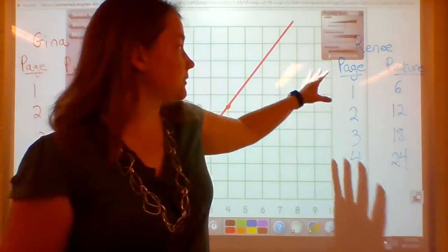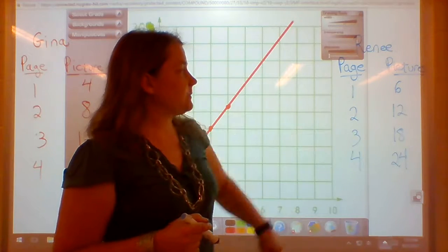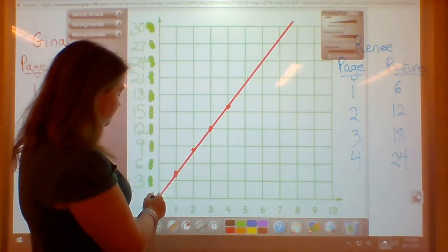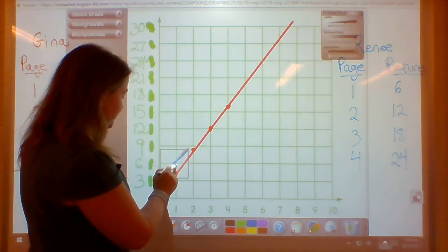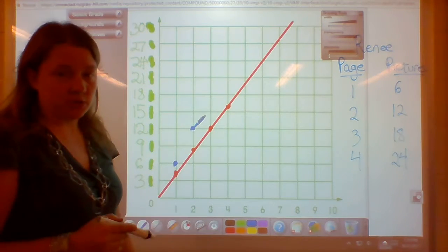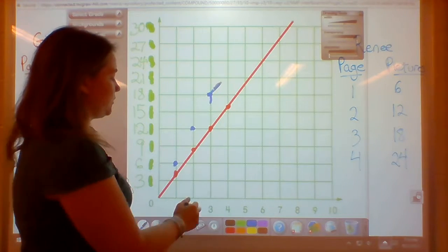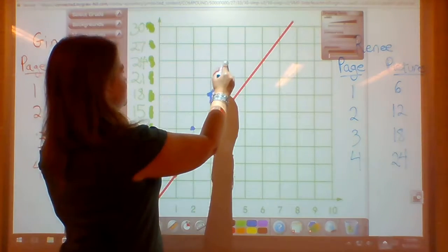Now we're going to switch over to Renee's pictures. Renee has 6 pictures a page, so on page 1 she's going to have 6 pictures. On page 2 she's going to have 12 pictures. On page 3 she's going to have 18 pictures. And on page 4 she's going to have 24 pictures.